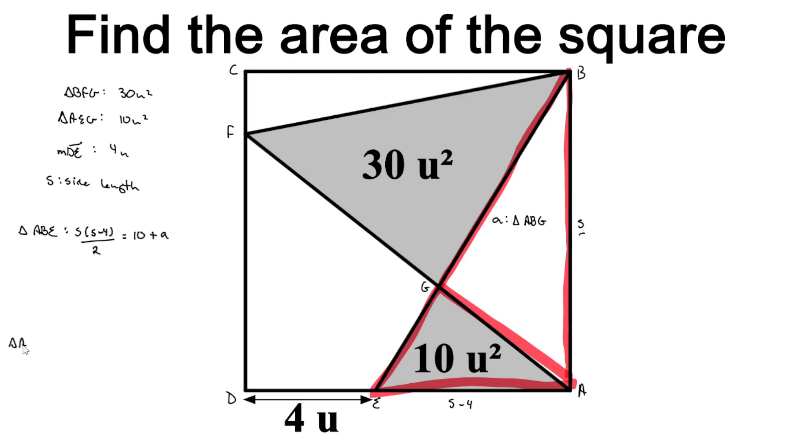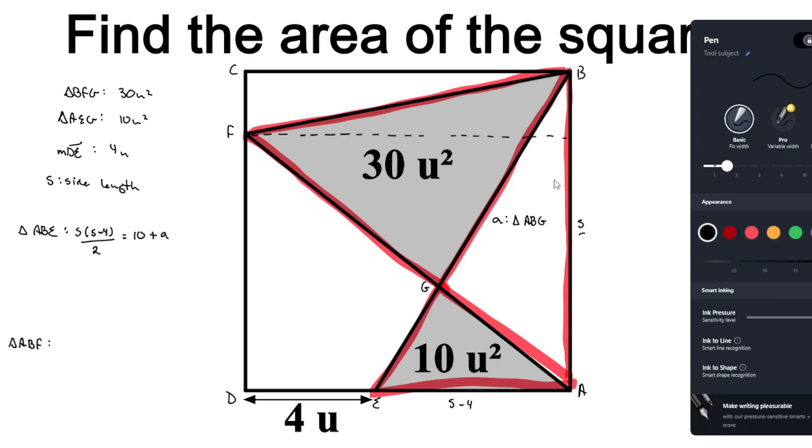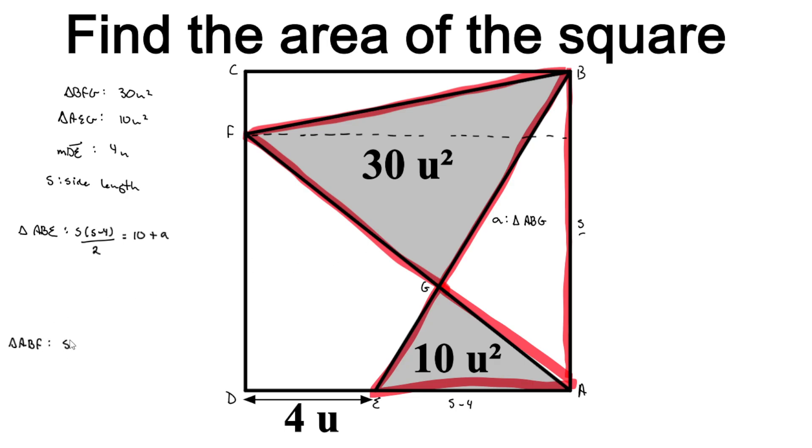Now we can do the same for triangle ABF. Triangle ABF also has the side length of our square as its base, but its height is also the side length. So the area of triangle ABF would be S squared divided by 2. But that is also equal to the area of triangle BFG, which is 30 square units, plus the area of triangle ABG, which we denoted as A.